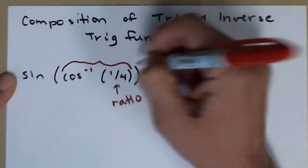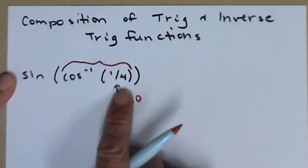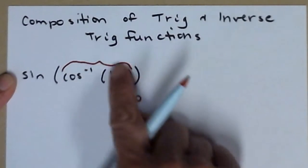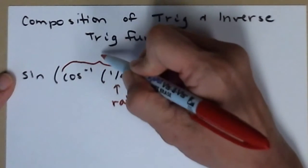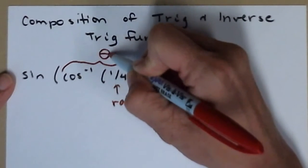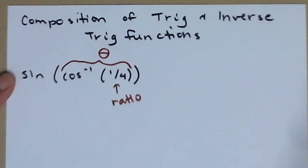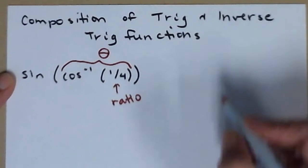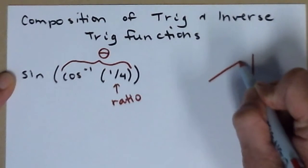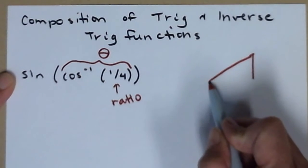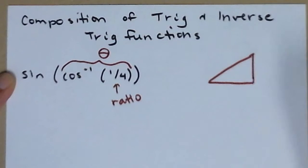This is crucial. The inverse cosine of a ratio, this whole thing, is an angle. So what I like to do is give it an angle name. And then I always do a picture. You should always do a picture as well.